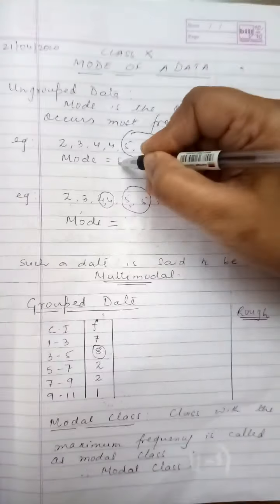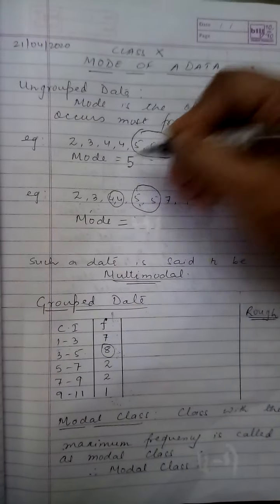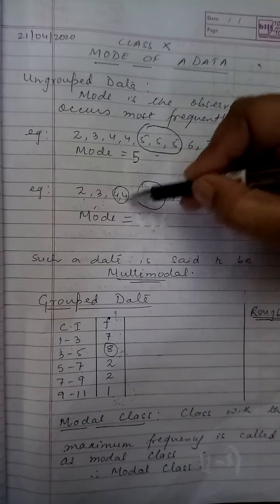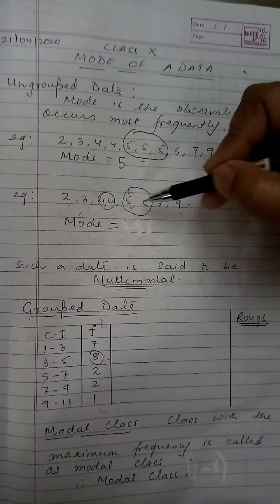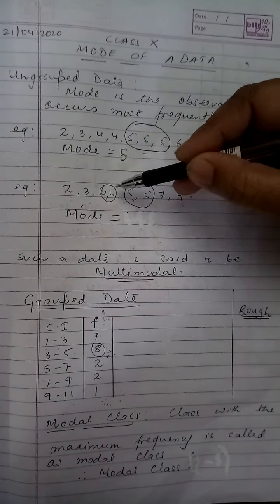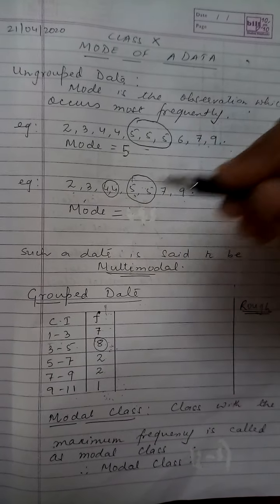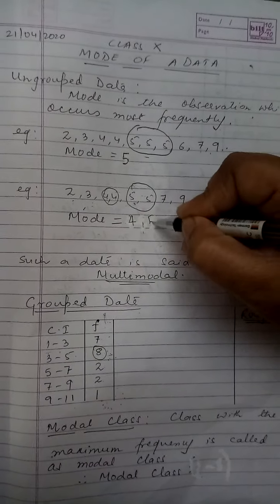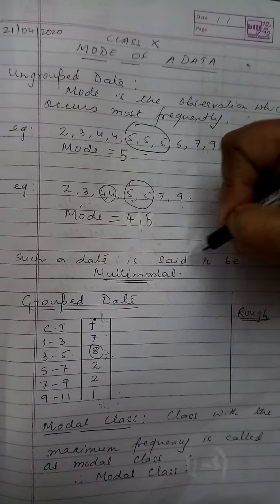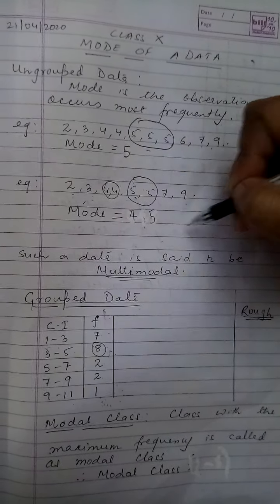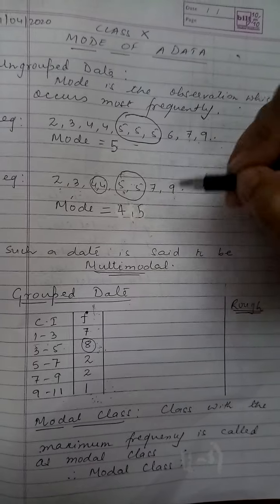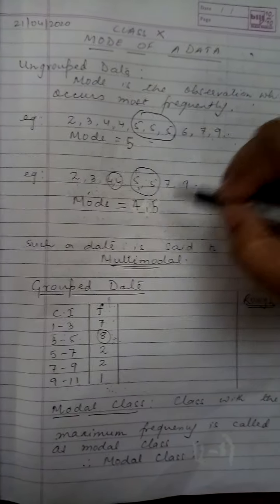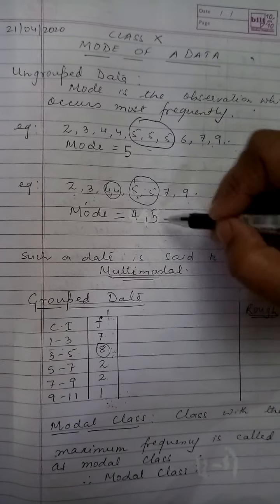That means the observation 5 is occurring the maximum number of times therefore the mode in this data becomes 5. In the next data that I have given over here I have encircled 4 as well as 5 because both of them are occurring twice each. So in this case I get two values of mode that is 4 and 5 and such a data is called as a multimodal data. But in 9th and 10th we are going to restrict ourselves only to a data in which you get a single mode.